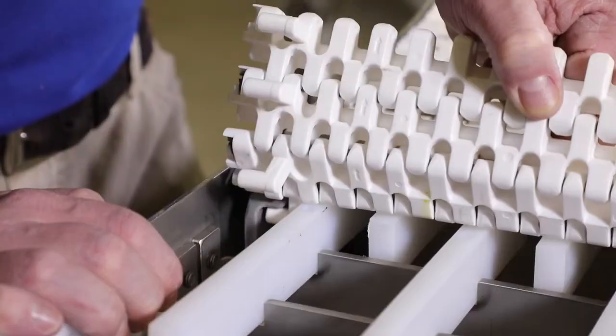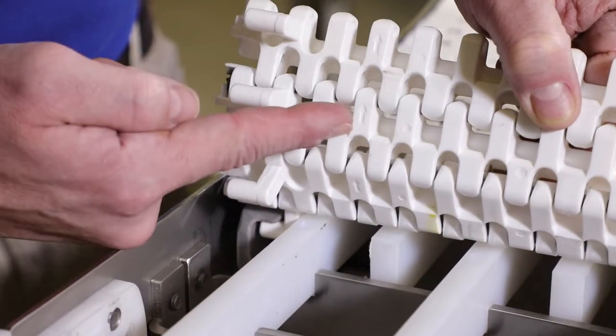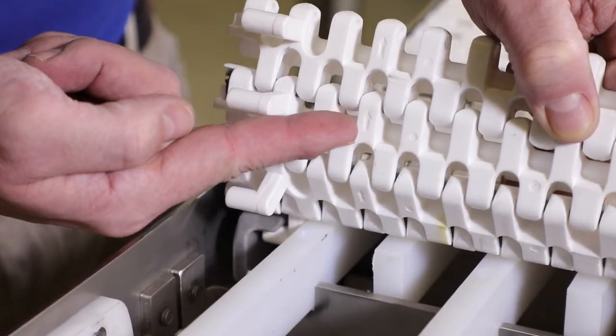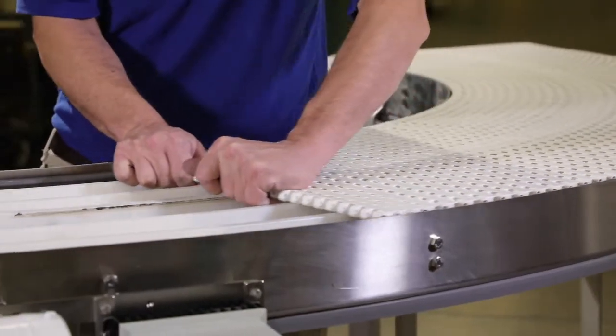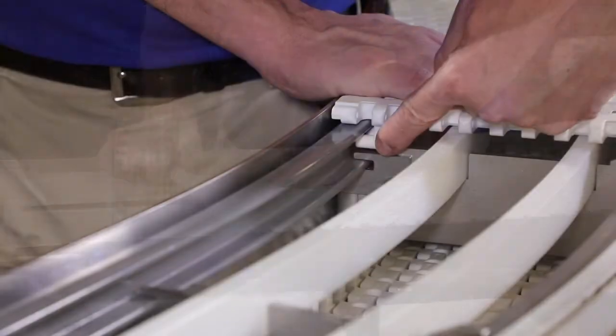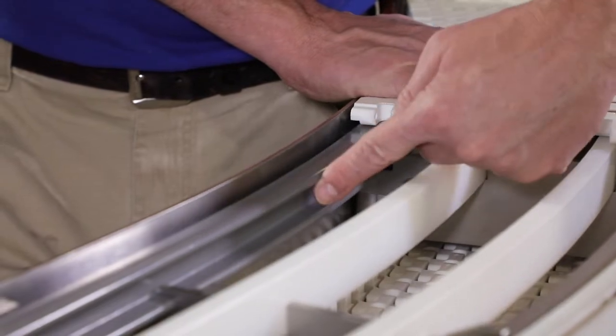When installing the new belt, orient the arrows on the underside of the belt pointing in the direction of belt travel. Position the new belt on the conveyor frame. Make sure the belt tabs are properly engaged with the wear strips.